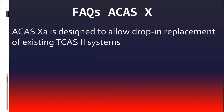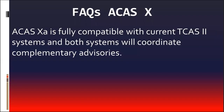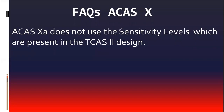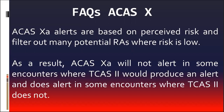To summarize key points: ACAS-XA is designed to allow drop-in replacement of existing TCAS II systems. ACAS-XA is fully compatible with current TCAS II systems, and both systems will coordinate complementary advisories. ACAS-XA does not use the sensitivity levels which are present in the TCAS II design. ACAS-XA alerts are based on perceived risk and filter out many potential resolution advisories where risk is low. As a result, ACAS-XA will not alert in some encounters where TCAS II would produce an alert, and does alert in some encounters where TCAS II does not.